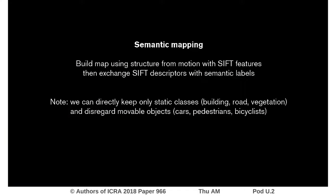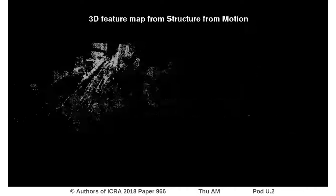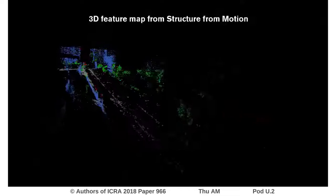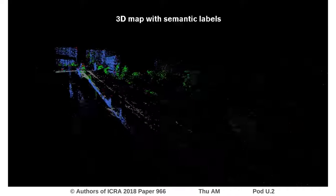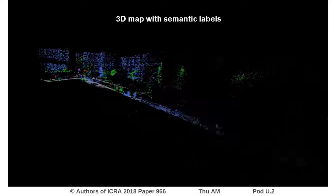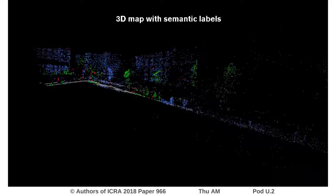So where does the map of labelled 3D points come from? We use the fact that traditional methods work well over short time periods and use a traditional structure-from-motion pipeline to reconstruct the 3D structure of landmarks from a single video sequence. Then each image from the video sequence is segmented and each reconstructed 3D point is labelled using the images from which it was seen in. Blue points represent buildings, green points vegetation, grey points road, and red is traffic signs.